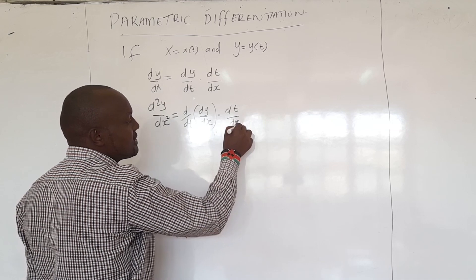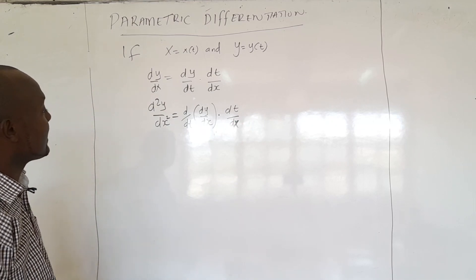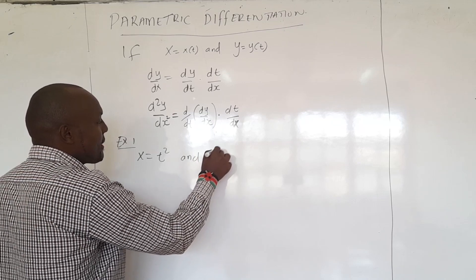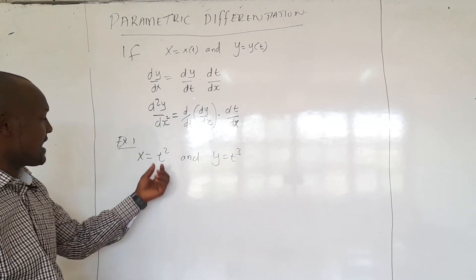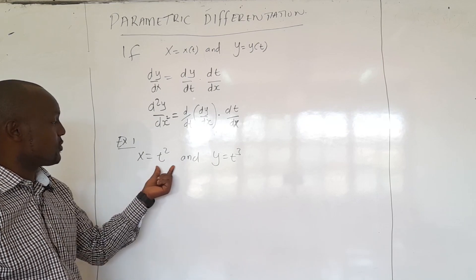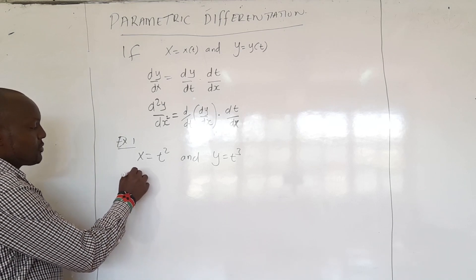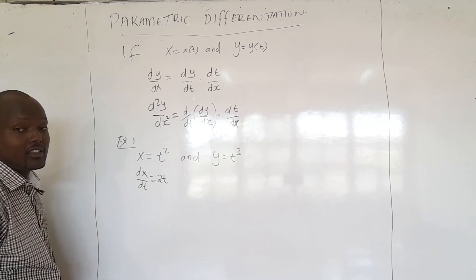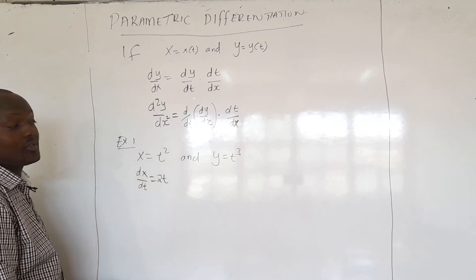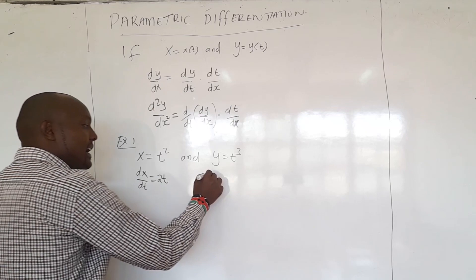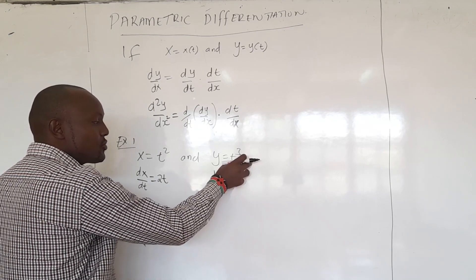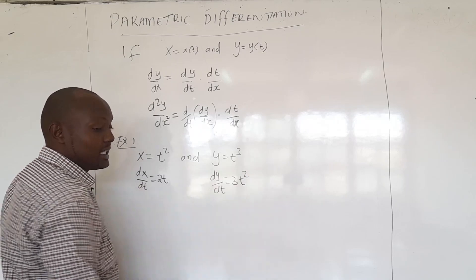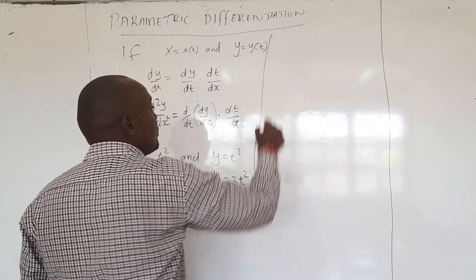Let's take an example. If you are given x equals t squared and y equals t cubed, how do you differentiate? Differentiating x with respect to T gives 2t — this is clear from the rules of differentiation from the first class of calculus. Differentiating y with respect to T gives 3t squared, because you bring down the 3 and reduce the power by one.